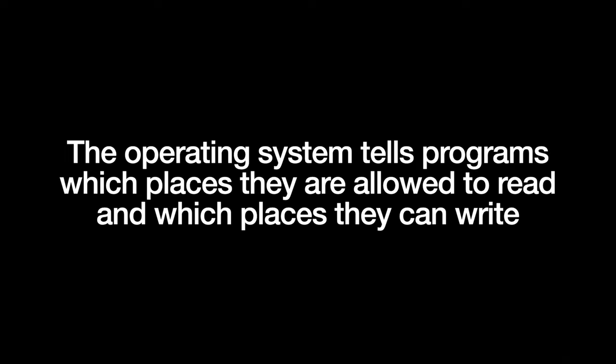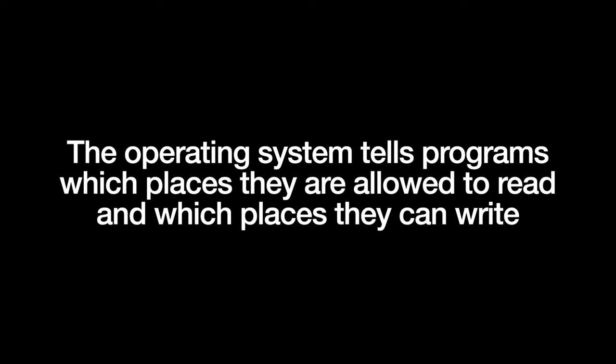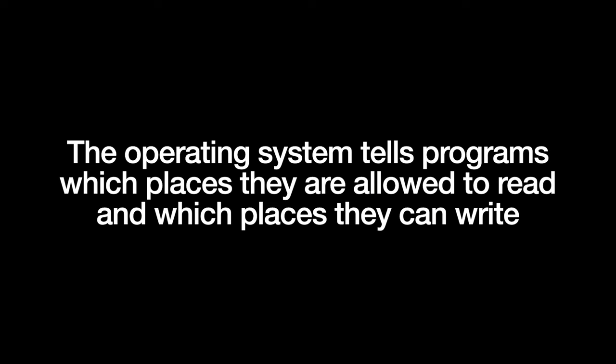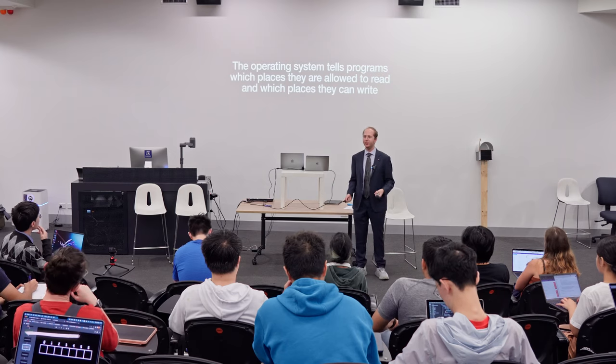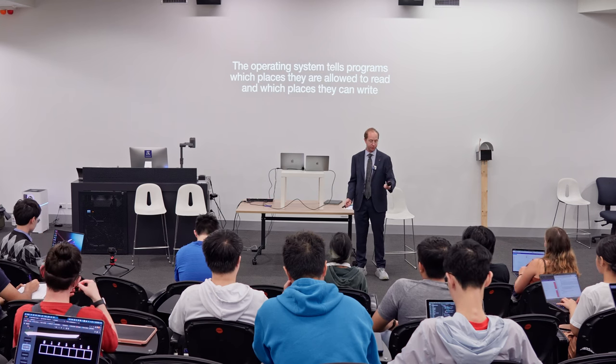The operating system also tells programs which places in the computer's memory are permissible for them to use and which are impermissible. The first question of the day: why might it be necessary for the operating system to tell us which places we're allowed to put stuff in and which we're not allowed to put stuff in as a programmer of a single program?